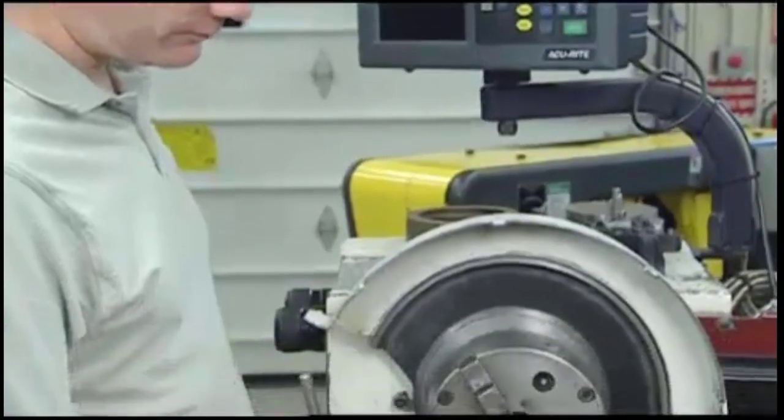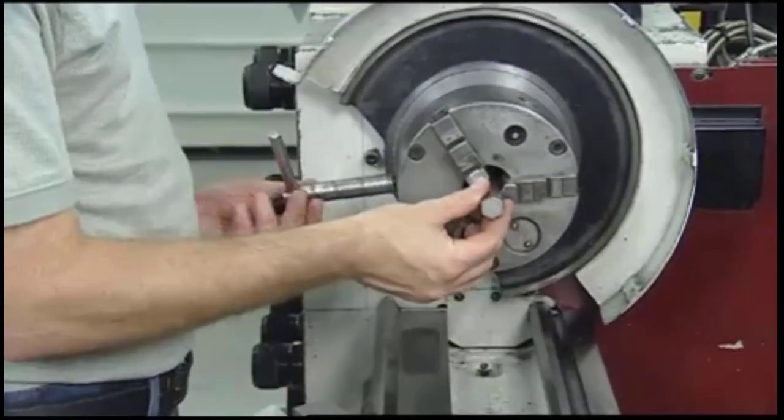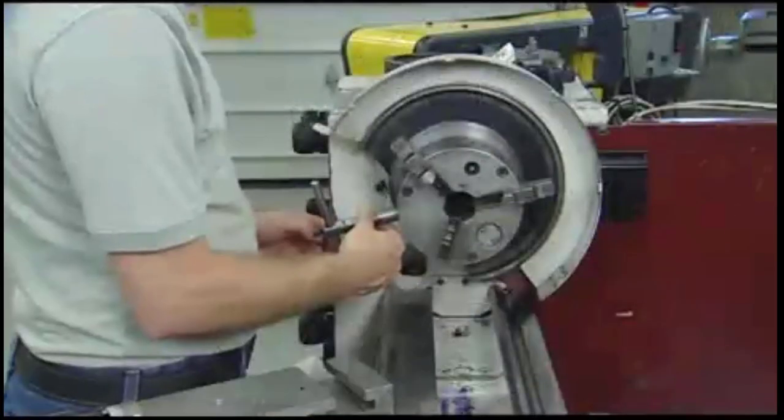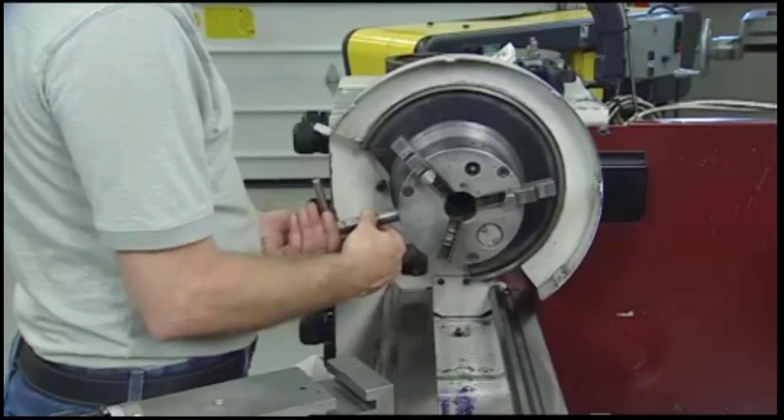Any work that has a number of sides divisible by three, like this hex stock, can be held in a three-jaw chuck. Larger-sized workpieces are gripped using reverse jaws.